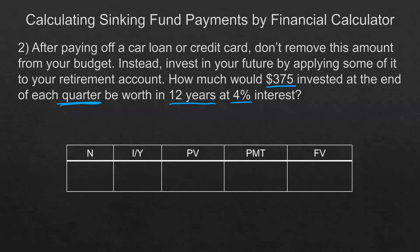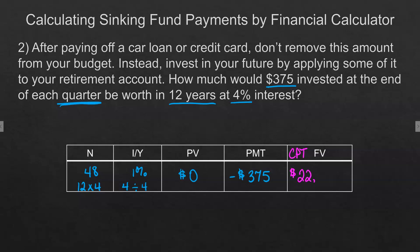We take 12 years times 4, which gives us 48 periods. We divide 4% by 4, so it's 1% per period. Present value is zero, and the payment is $375 being paid in to achieve a future value. Pause and find this yourself to make sure you've got everything on your calculator entered correctly. The answer is $22,958.48.